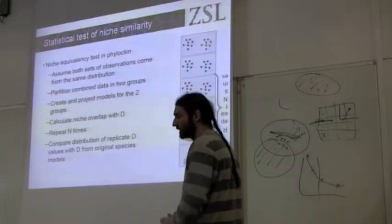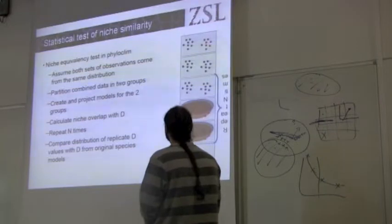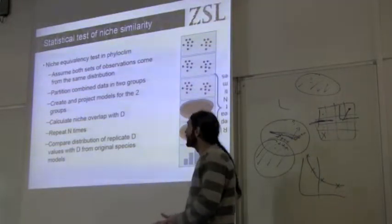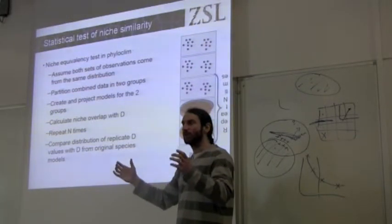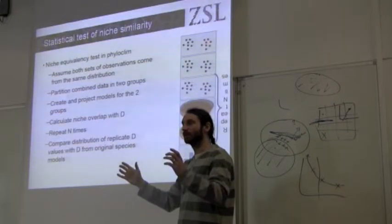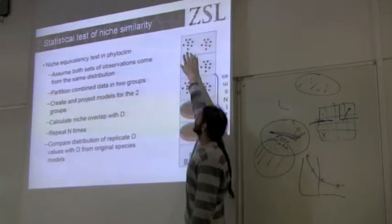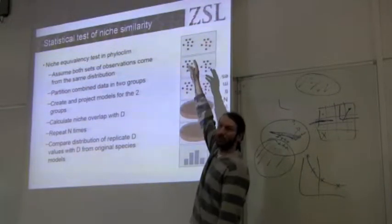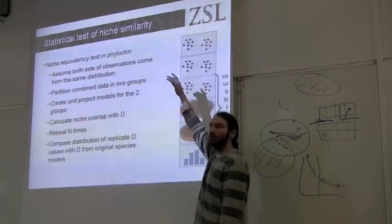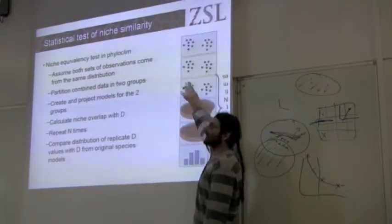The assumption we're testing with this test is that the observations for species 1 and species 2 really come from the same distribution — so they're really the same thing. Our test takes our two species and we randomly repartition this data so that we create a new species 1 and species 2. This is our resampling.